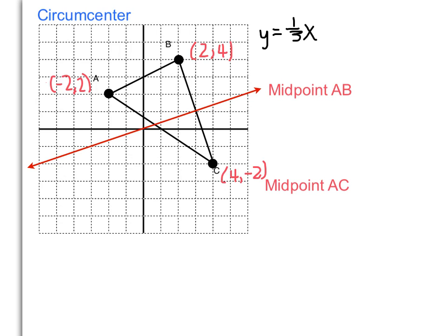Now, we are looking for the circumcenter. I have already drawn in the equation y = 1/3 x, as we found that perpendicular bisector in the previous video. Now we need to find two more perpendicular bisectors.